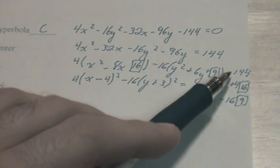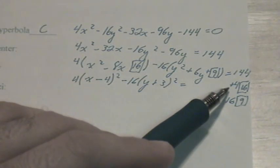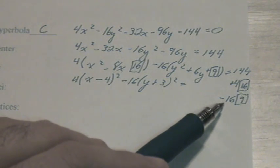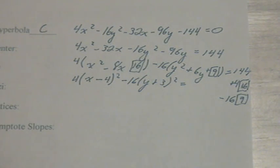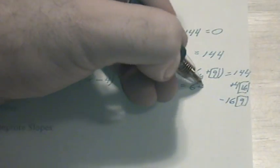If we take the 144, the 4 times 16, and the negative 16 times 9, put them all together, we're going to get 64.